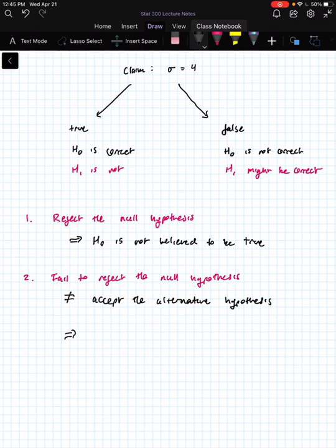All that failing to reject the null hypothesis means is that we can't conclude that H0 is not the true state of nature. It could be. In that case, H0 would be true, but we make no judgment about H1. Another way of writing this is we have insufficient evidence to reject the belief that H0 is true.